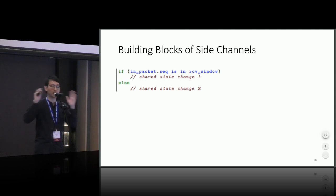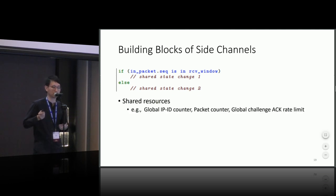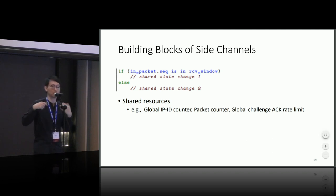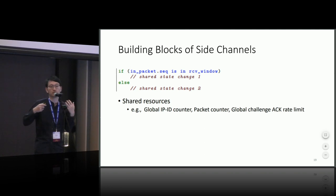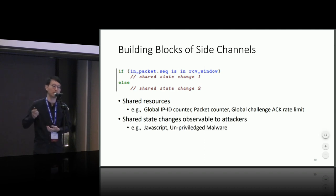From a high-level view, all prior side channel attacks against TCP connections manifest through two essential building blocks: first, any side channel must involve some global resource shared between the attacker and victim — in the context of TCP side channels, the shared state may change depending on whether the sequence number is in-window or not. Second, and most importantly, the shared state change must be observable to the attacker.